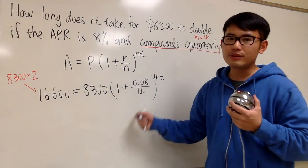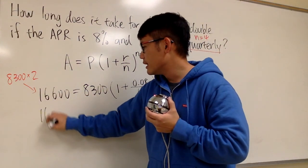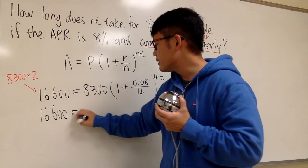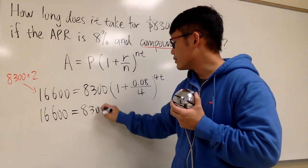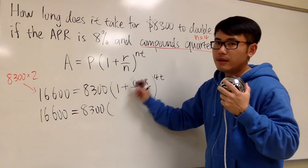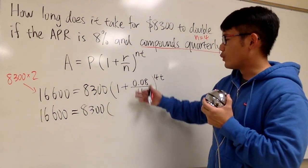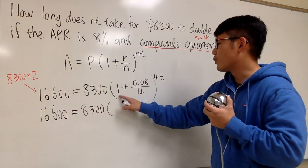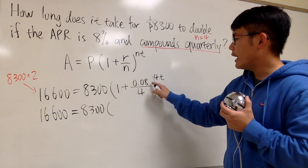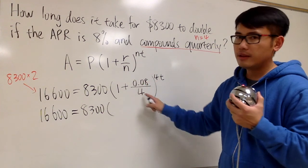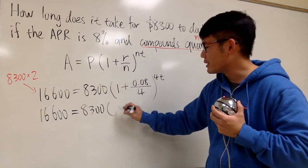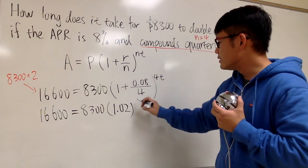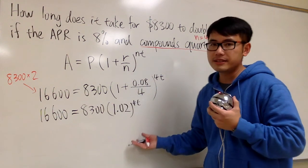Perhaps let's work out the inside first. Let me write this down again. This is 16,600, and this is equal to 8,300. Inside, just use the calculator or work this out in your head. This is 1 plus 0.08 divided by 4. This is 0.02 plus 1 is 1.02. And this is still raised to the 4t power.